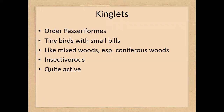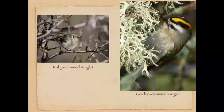Kinglets are some of our smallest birds and can be found living on campus. They are insectivorous, quite active, and much smaller than a sparrow. You can see both the ruby-crowned and golden-crowned kinglet in this region.